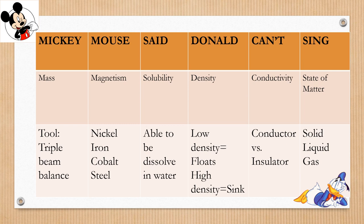Magnetism, we use the strategy of mix. Solubility, we remember the definition able to dissolve in water. Density, remember low density floats, high density sinks. Conductivity: conductors allow electricity to flow, insulators block the electricity or energy. State of matter is solid, liquid, and gas.